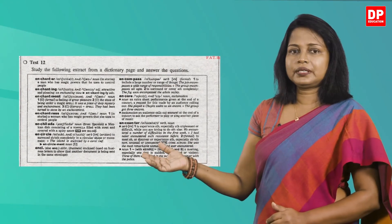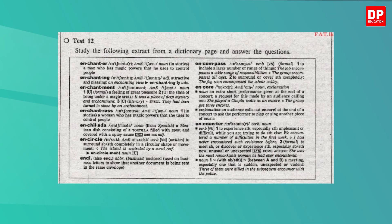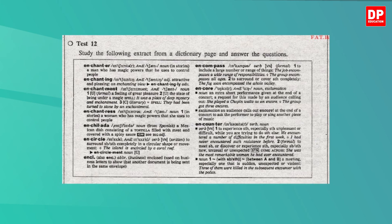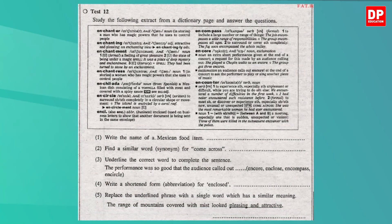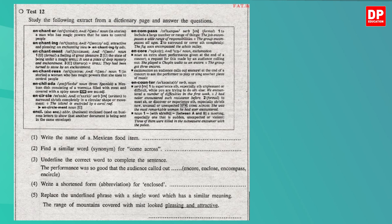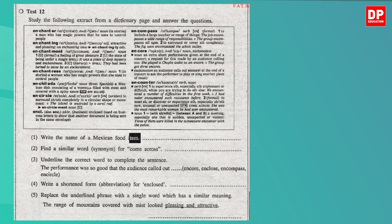Children, let's do a question which has been taken from a past paper now. Look at this dictionary page. You have to study the dictionary page and answer these questions. You can pause the video and do the activity now. Okay let's check your answers. What about the first one? What is the name of a Mexican food item? Look at the dictionary page — it's enchilada.